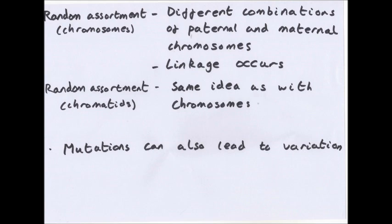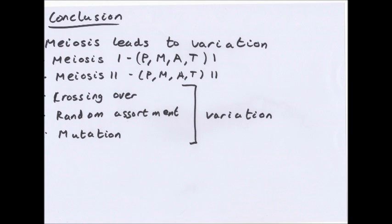In conclusion, meiosis leads to variation. If you want to remember the order, remember PMAT. Meiosis 1, you have prophase, metaphase, anaphase, telophase 1. Meiosis 2, you have prophase, metaphase, anaphase, telophase 2. Variation is caused by crossing over, random assortments of chromosomes and chromatids, and mutation.